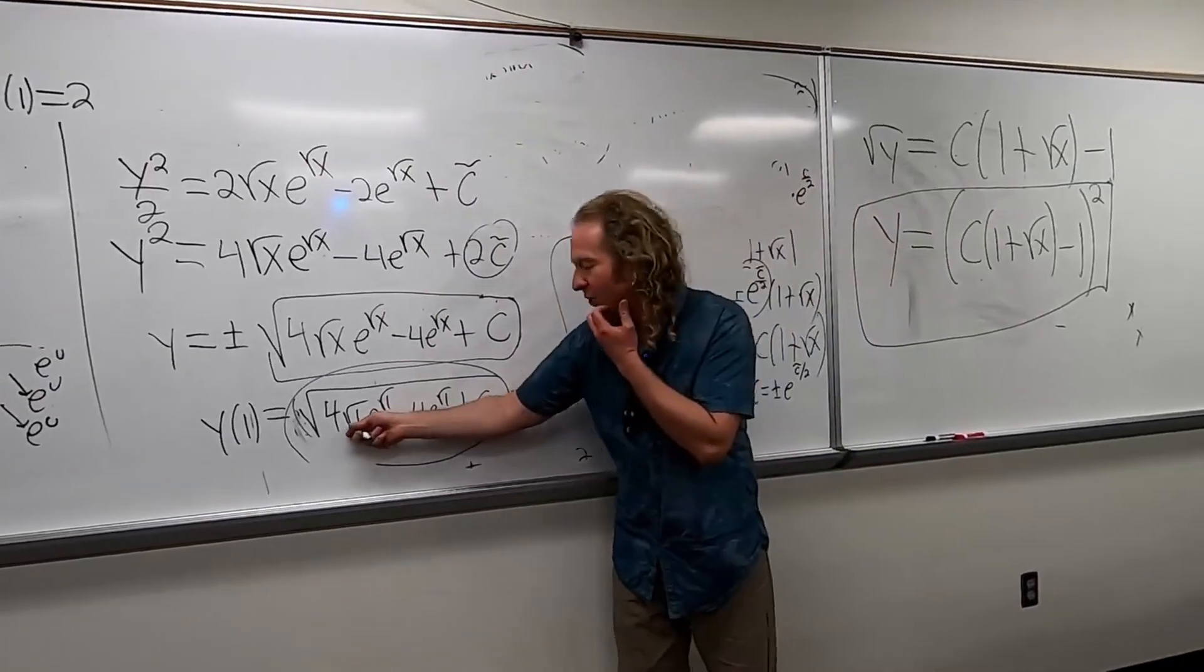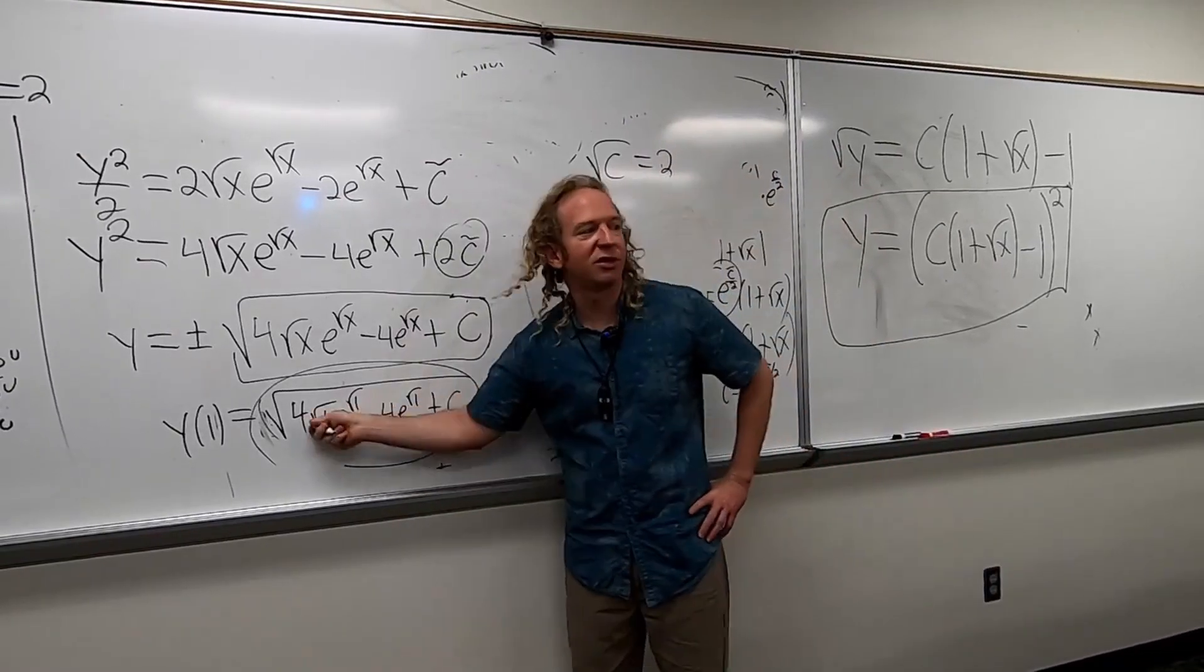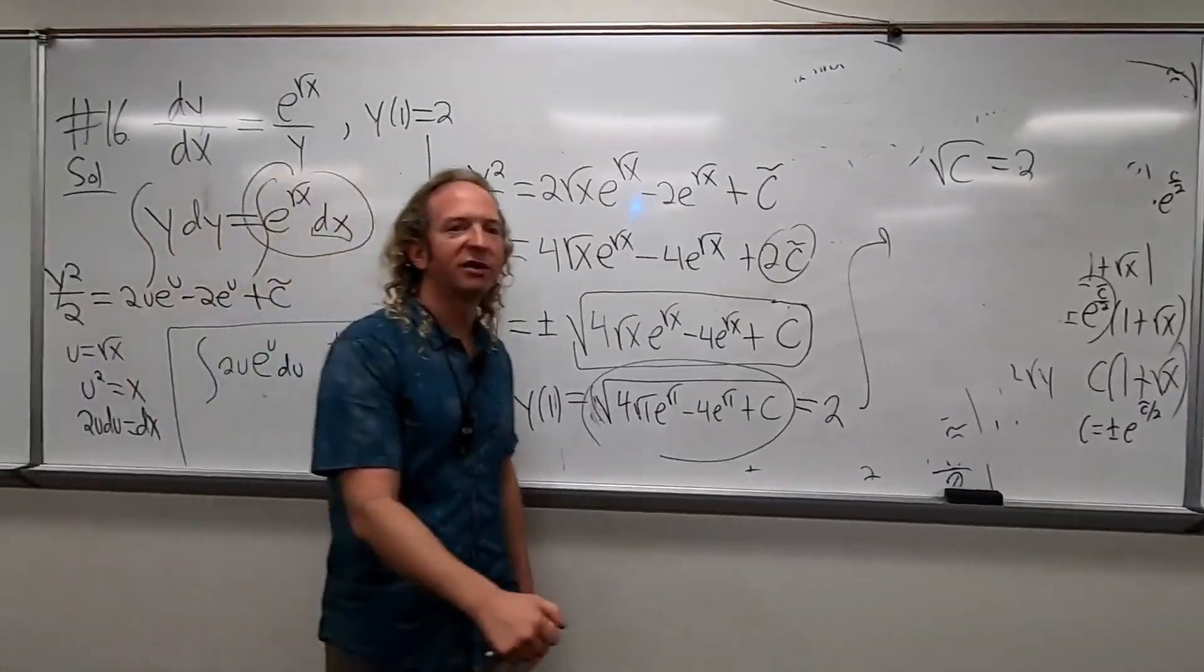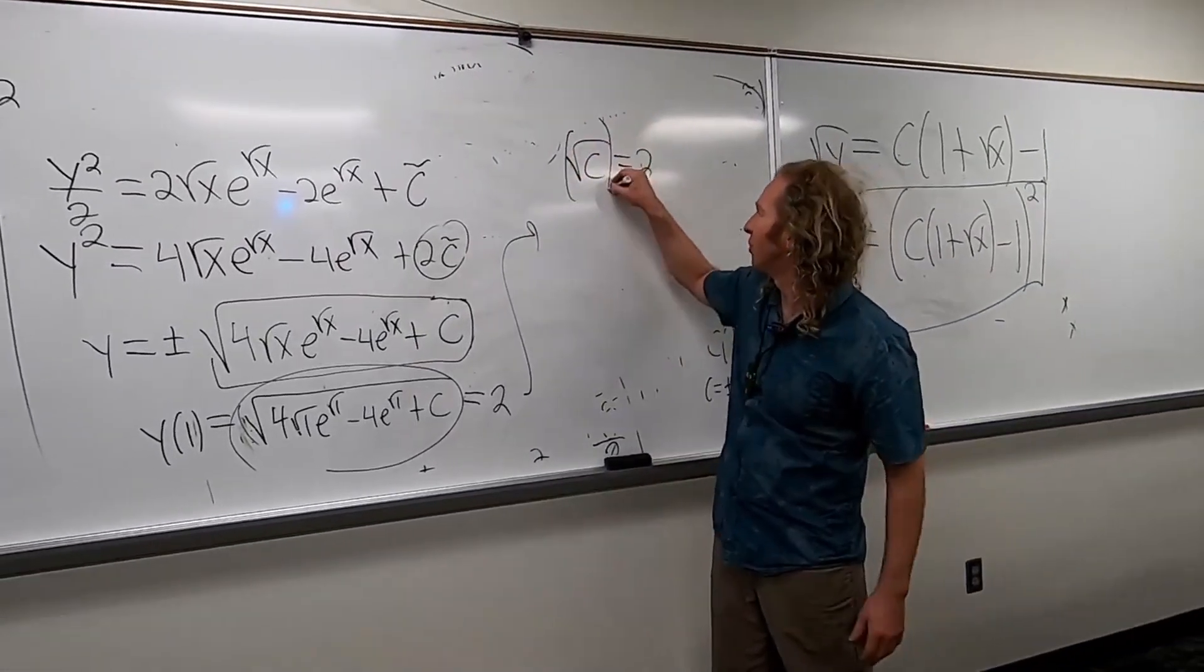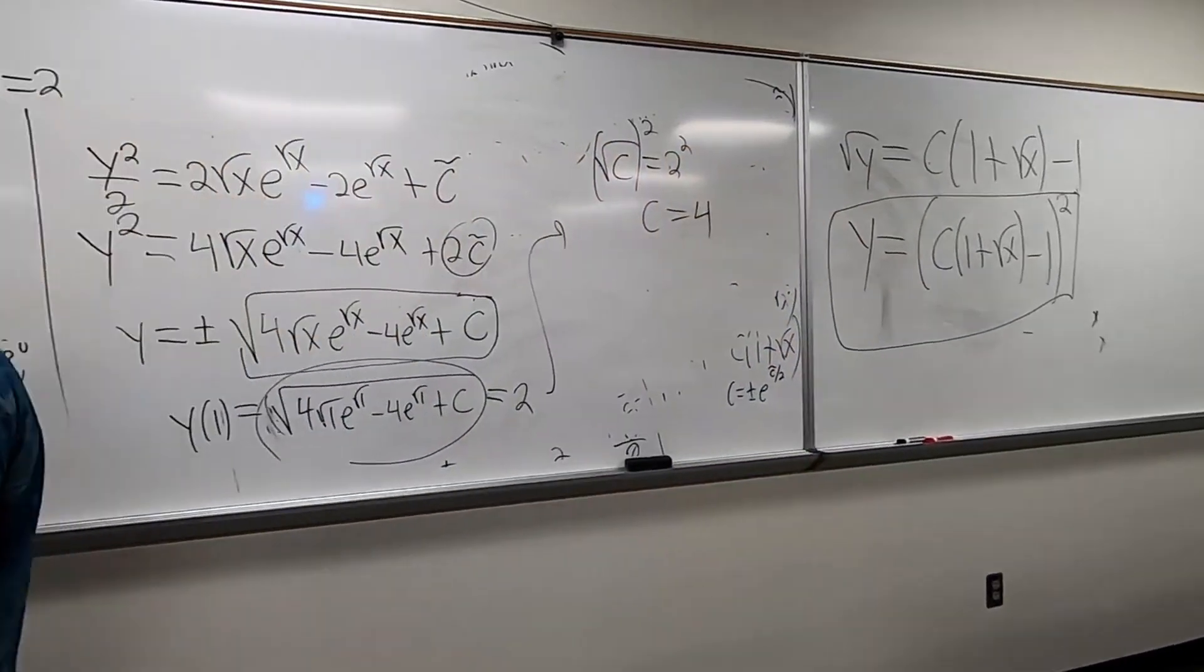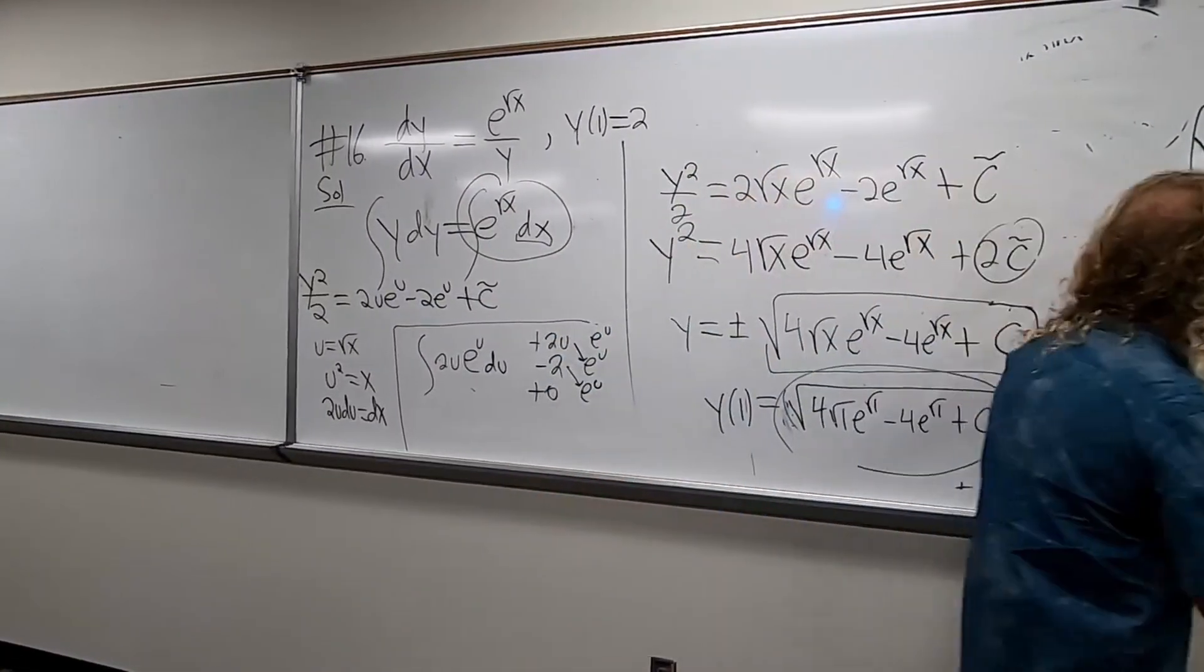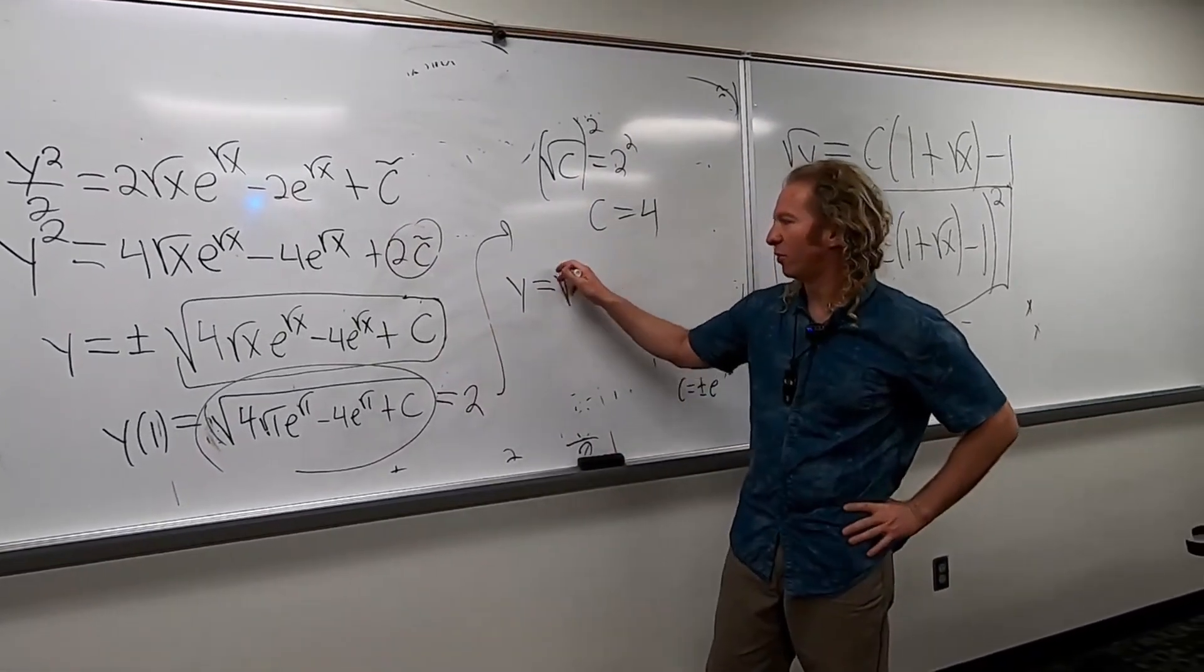So now we get, I think these cancel. So we get the square root of C equals 2, because this minus this is 0. And then to finish, what do you do to both sides to finish? Square them. Yeah, good, square them. Square both sides, so you get C equals 4. So there's our C. The last thing to do is take the 4 and just put it back in here. Just plug it back in.